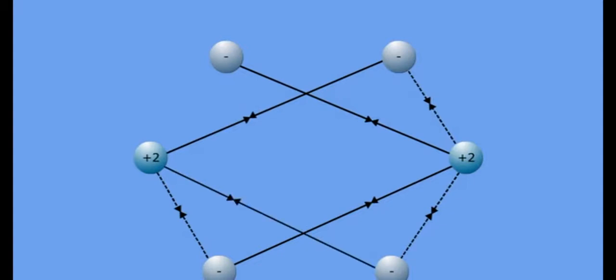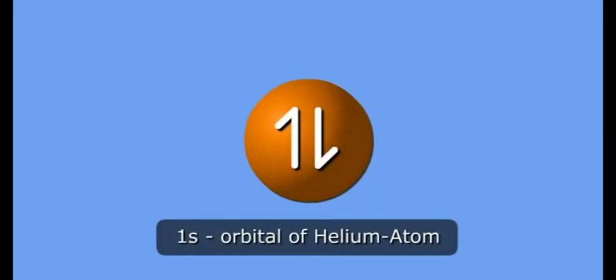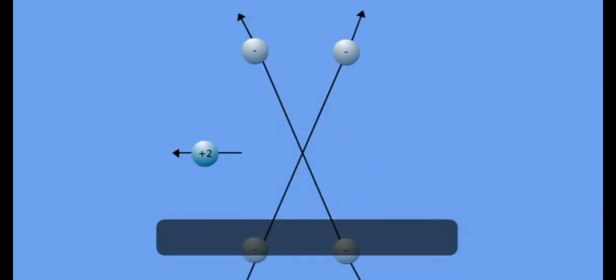Each helium atom has two electrons in its 1s orbital. It has been found that when two helium atoms approach each other, four new attractive forces and five new repulsive forces come into play.